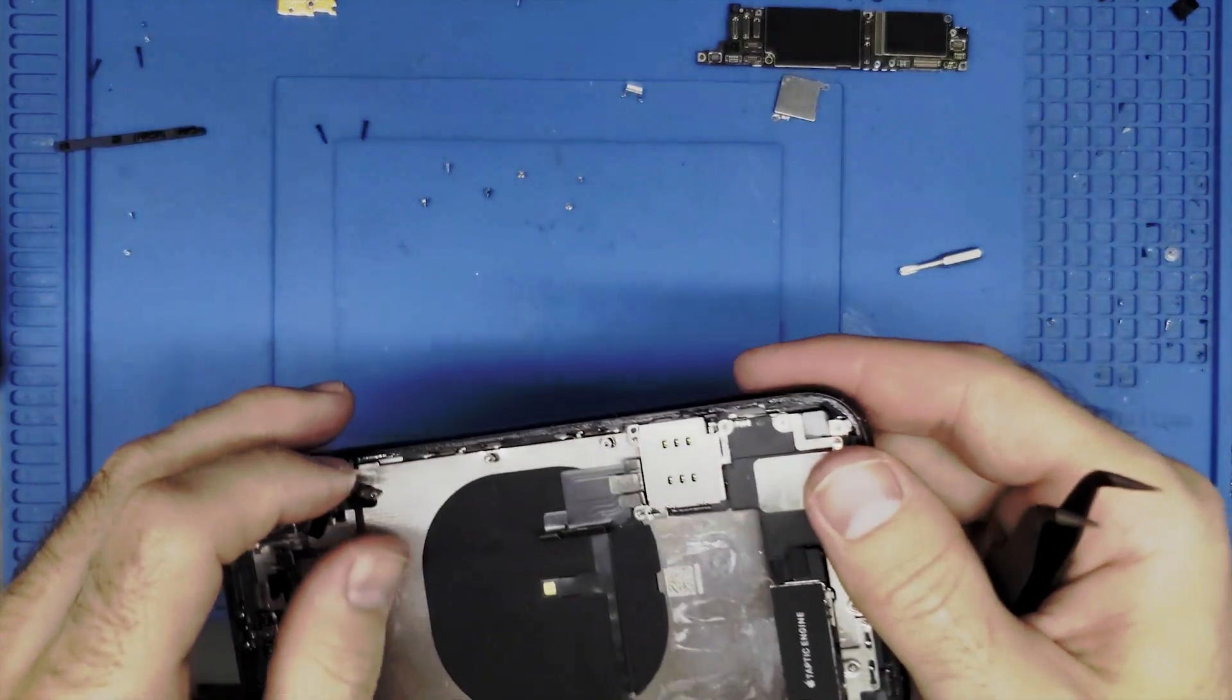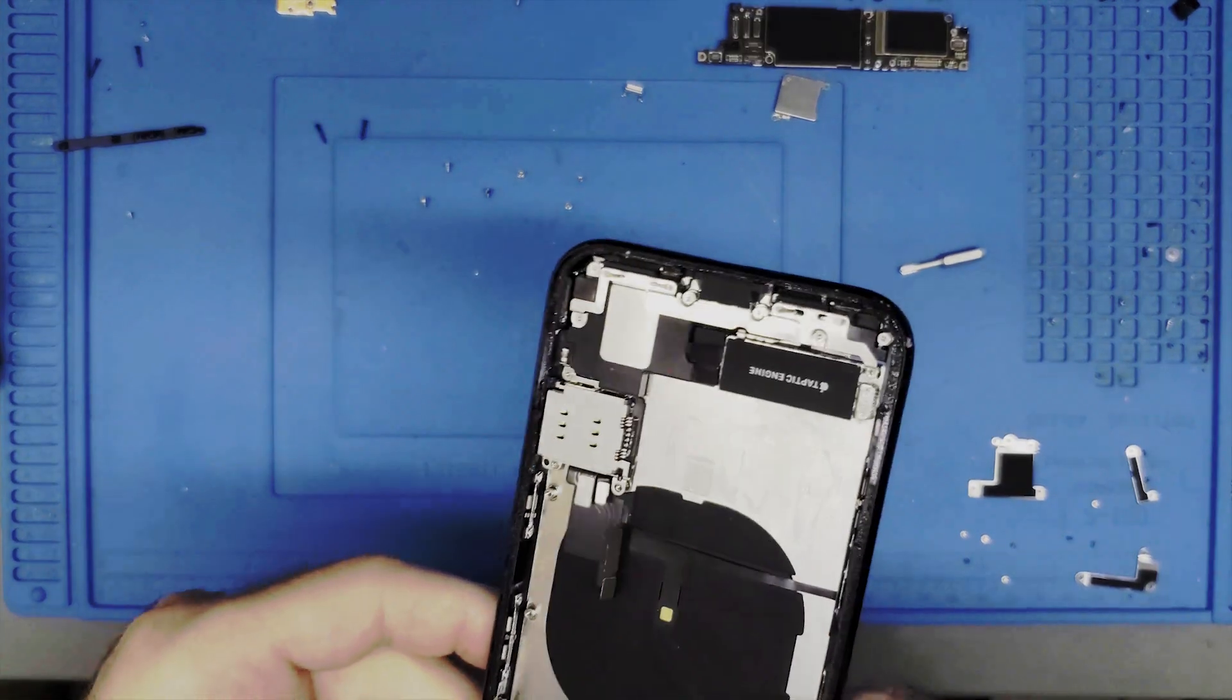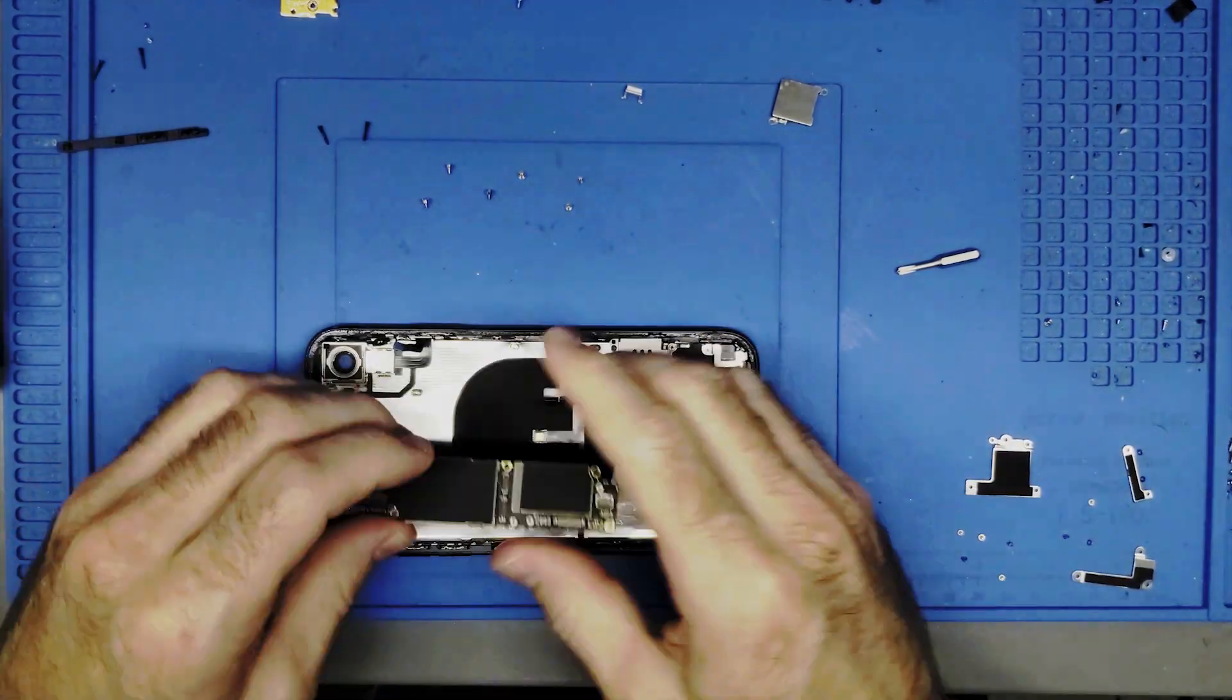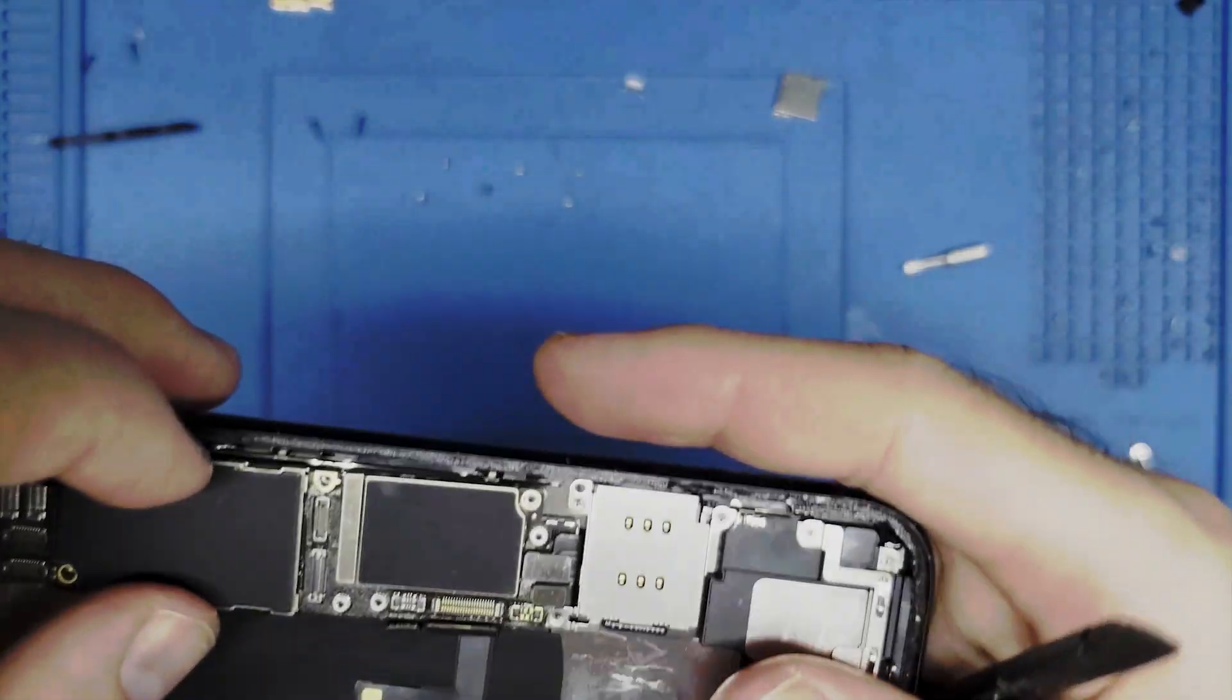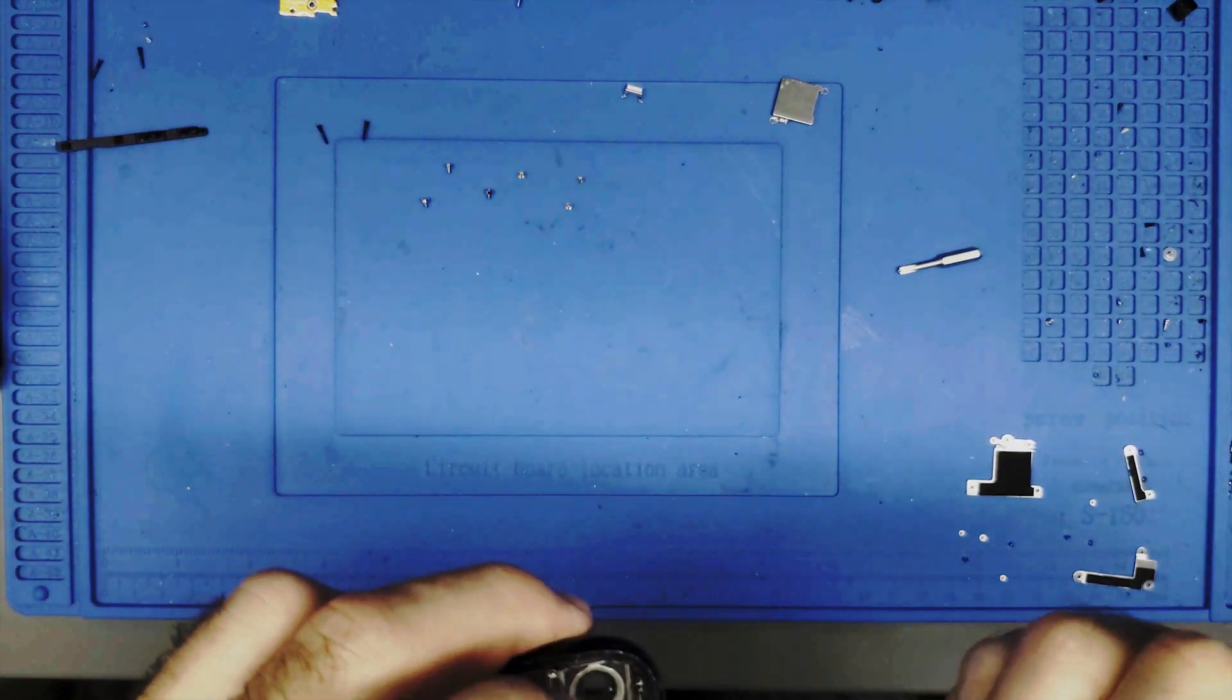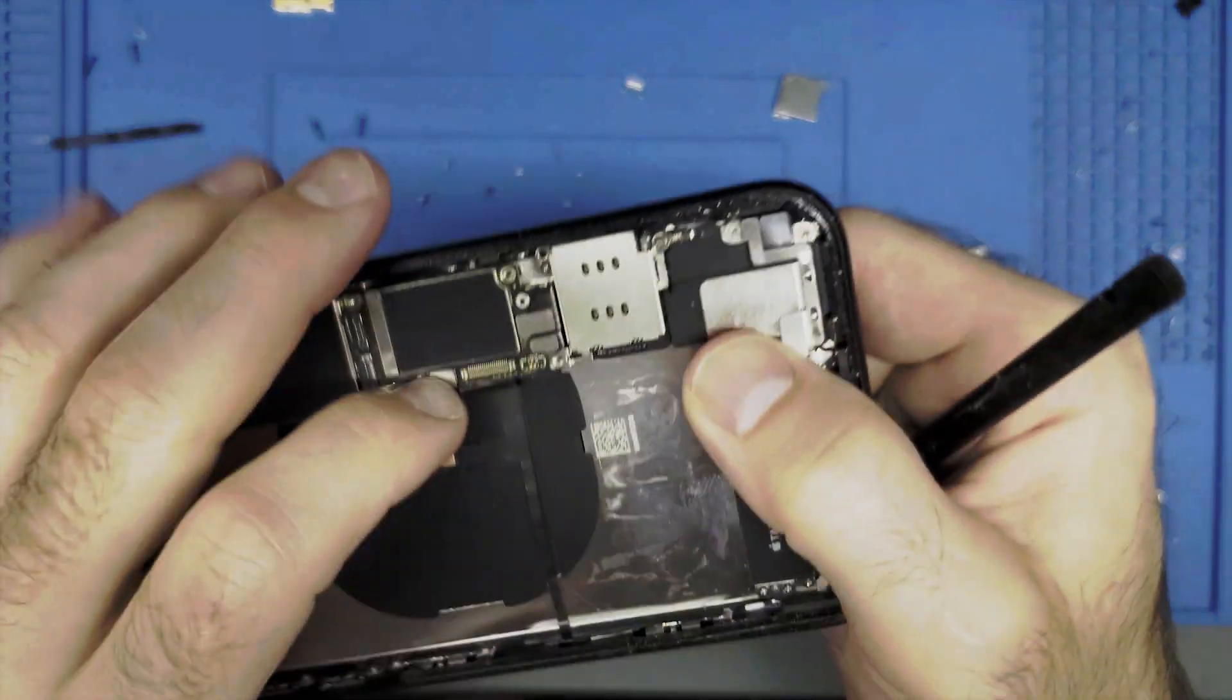Now we just got two more screws to put in for the power button. We'll have the power button installed. Okay just got to pull out all of these cables. Come on. I think that's it. Nope because there's one here too. There I think we got it.